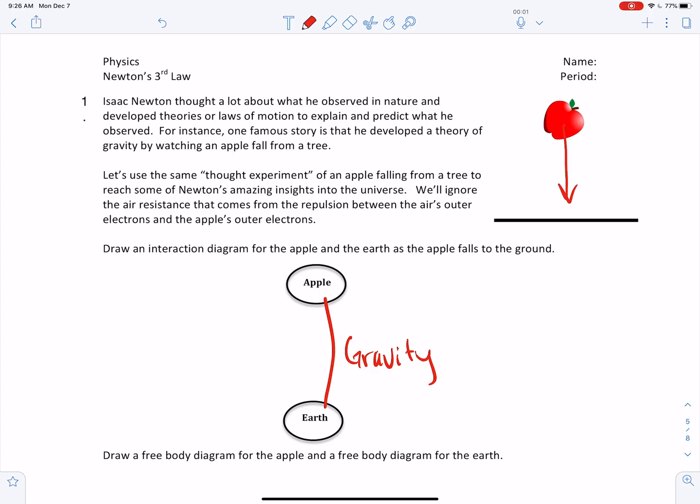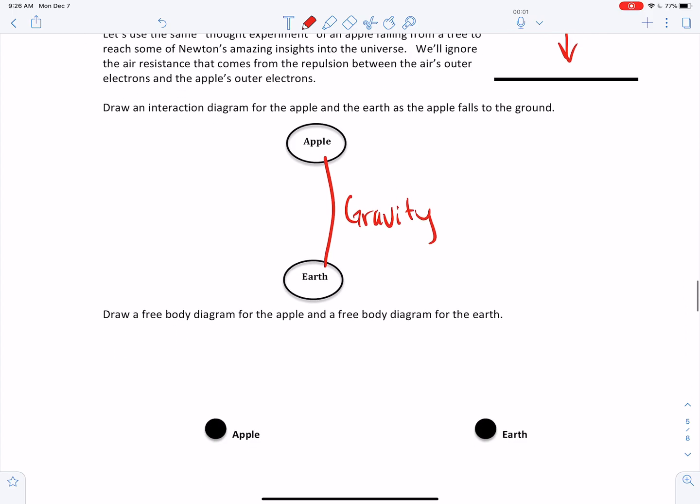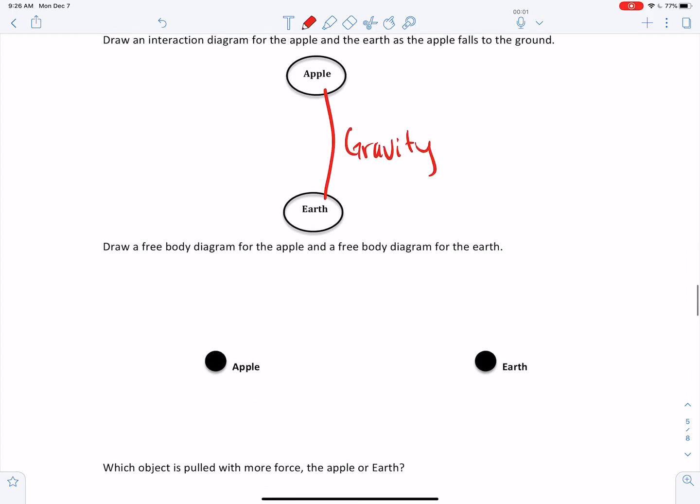So I'm just going to draw a connecting line between the apple and the earth. Now this force of gravity represents, excuse me, this interaction of gravity represents two forces. There's a gravity pull on the apple and a gravity pull on the earth. And we can see that in the free body diagrams.